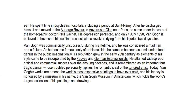He spent time in psychiatric hospitals, including a period at Saint-Rémy, a famous psychiatric hospital. After discharge, he moved to Auvers-sur-Oise near Paris and came under the care of the homeopathic Dr. Paul Gachet — homeopathic meaning not your traditional medically trained doctor, but one who works with herbs, plants, and holistic medicine. His depression persisted, and on July 27, 1890, van Gogh is believed to have shot himself in the chest with a revolver, dying from his injuries two days later.